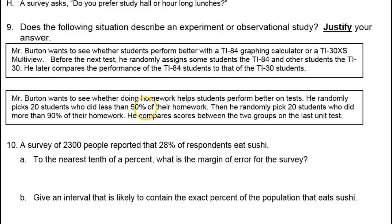Now number nine — does the following situation describe an experiment or an observational study? It's going to be an experiment if the researcher controls who gets what treatment. In the problem from yesterday, some mice got a vitamin and other mice didn't. Because the researcher decided which mice get the vitamin and which mice don't, that was an experiment. If the subjects of the study decide for themselves which category they fall into, then that's an observational study.